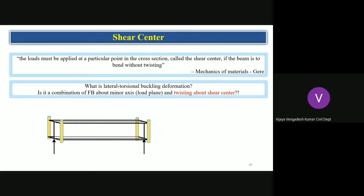This is the torsional boundary condition. Analogous to the flexural condition — where we restrain deflection but allow rotation — here we restrain twisting but allow warping. The beam is subjected to a point load, a concentrated load at the center.